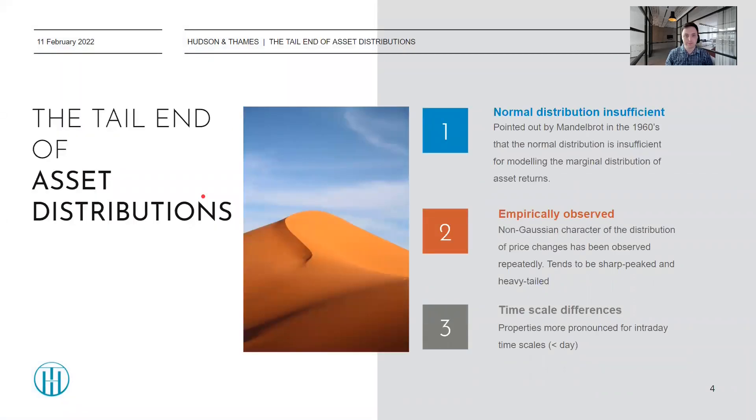Let me make some brief comments about the tails of these distributions. Already in the 1960s, Mandelbrot pointed out that the normal distribution is insufficient to accurately capture financial time series data. This non-Gaussian character has been empirically observed repeatedly for price changes, and the distribution tends to be short-peaked and heavy-tailed. There's also this idea of timescale differences where properties are more pronounced for intraday timescales.